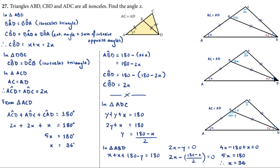Continuing with method two: since CBD is 2X, angle DCB is also 2X because triangle BCD is isosceles with CD equal to BD. And since AC equals AD in triangle ACD, both base angles are 2X. You can then solve the same way as before.